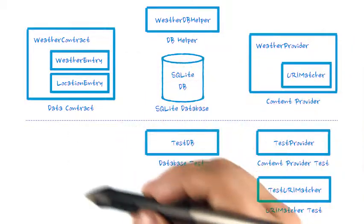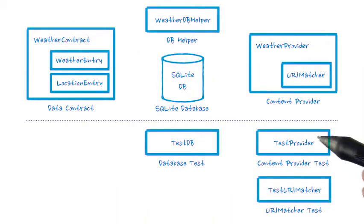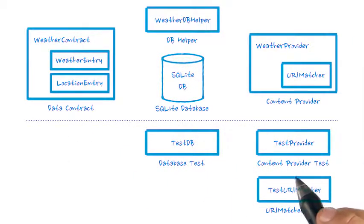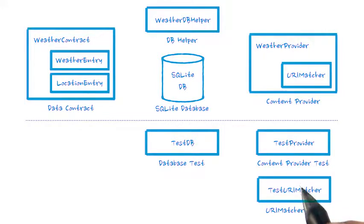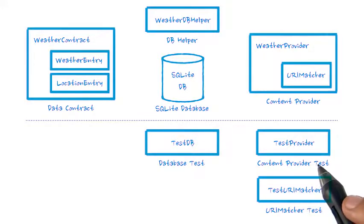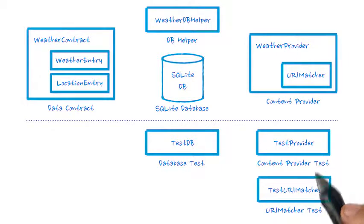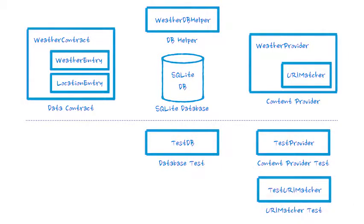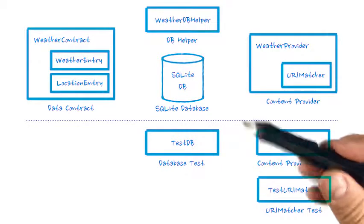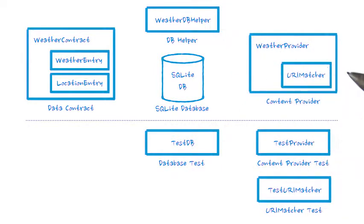Here's an overview of the changes we're going to be making to Sunshine. We'll continue to refer to this map as we move through these coding exercises. There are lots of terms in this map that we haven't discussed before, such as database contract, content provider, and DB helper.